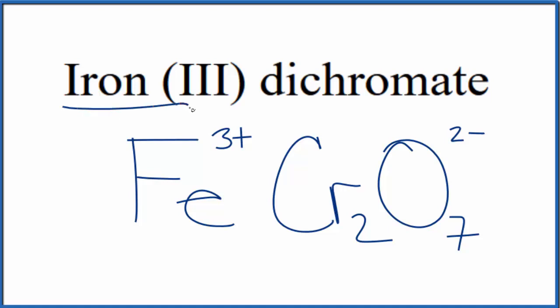Since iron is a metal and the dichromate ion is a polyatomic ion, this is an ionic compound. These charges need to add up to zero, give us a net charge of zero.